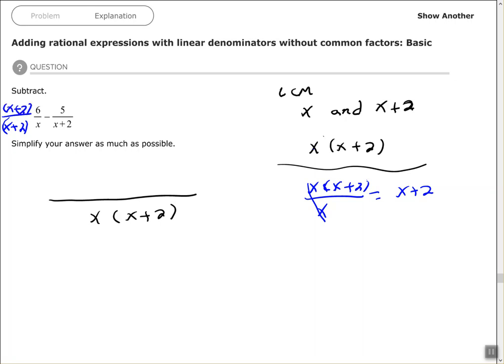Whatever you multiply the bottom by, you have to multiply the top of the fraction by the same thing. That gives us 6 times x plus 2 for the first fraction. The second fraction we had x plus 2, the common denominator is x times x plus 2, so this one I had to multiply by x. It gives me 5 times x in the numerator there.